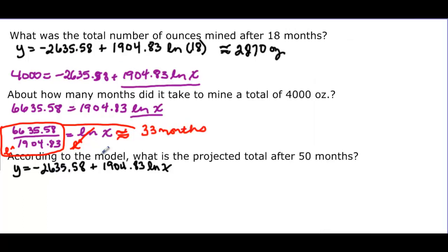Our very last problem. It says according to this model what is the projected total for after 50 months. And this one we don't know, but we're just going to come in here and let x be 50. Because it was just a plug and chug. And we find out that this is 4816.16 ounces.